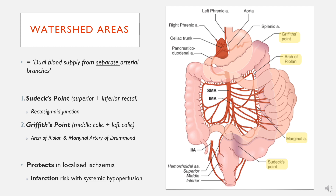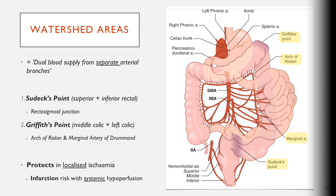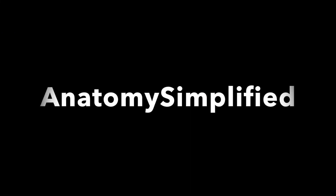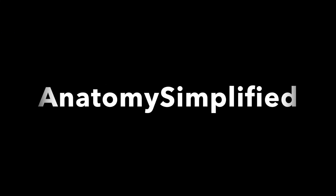So that covers arterial supply — celiac artery, SMA, IMA — and remember the borders of the gut: foregut, midgut, and hindgut. It becomes fairly straightforward after that.